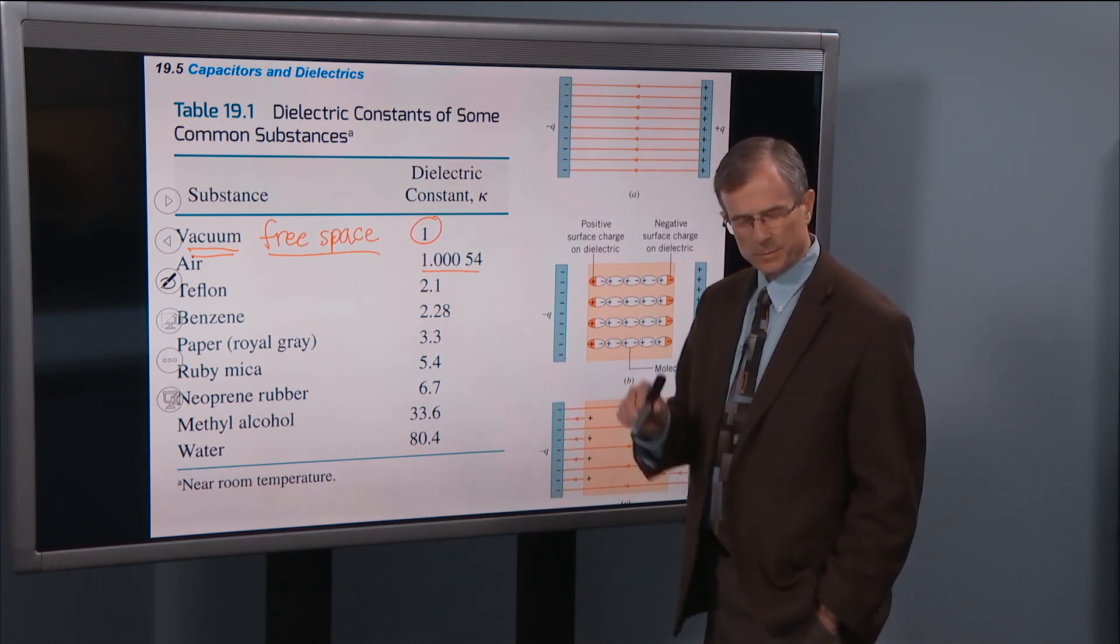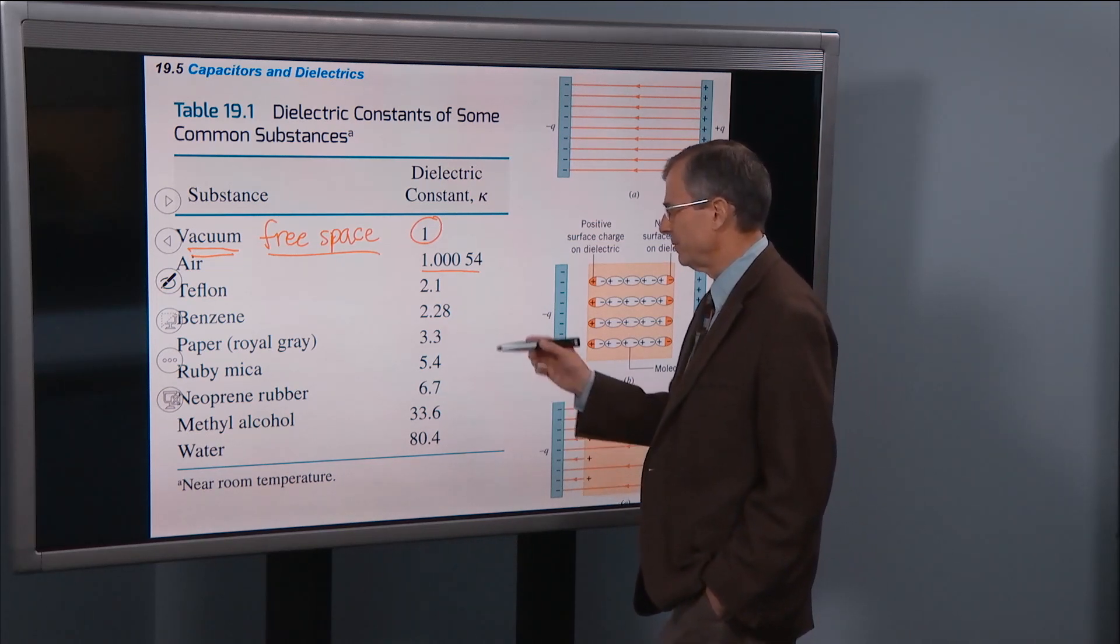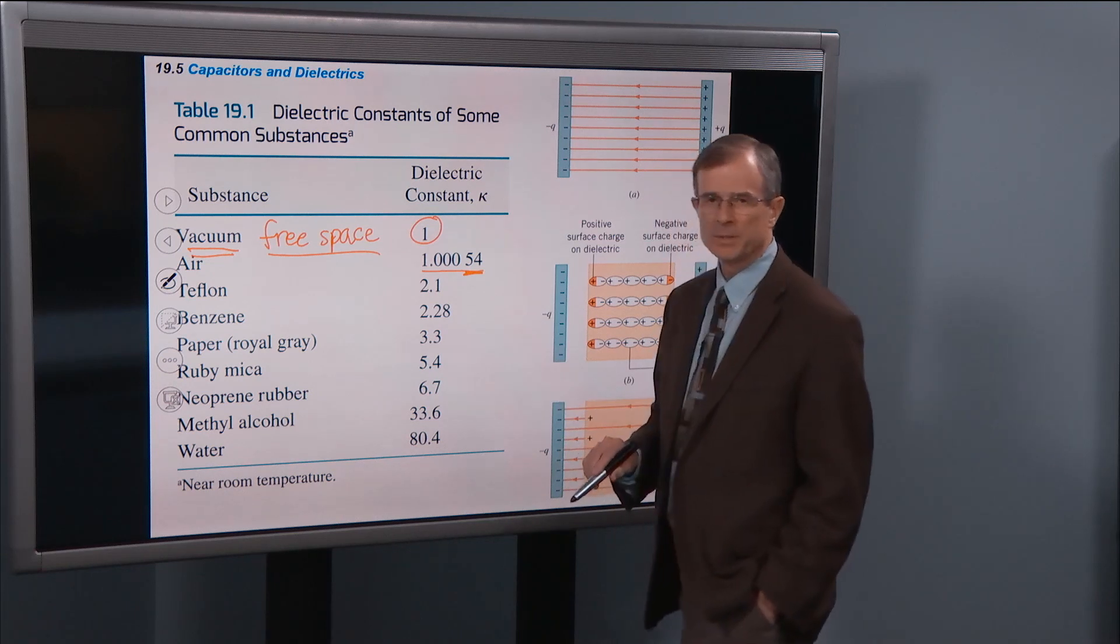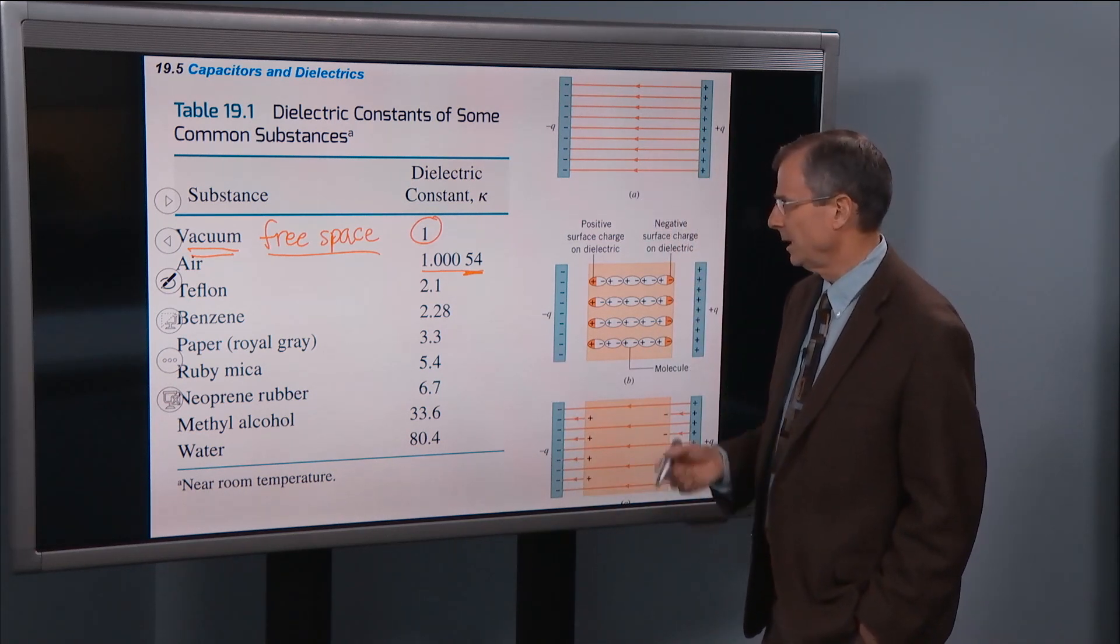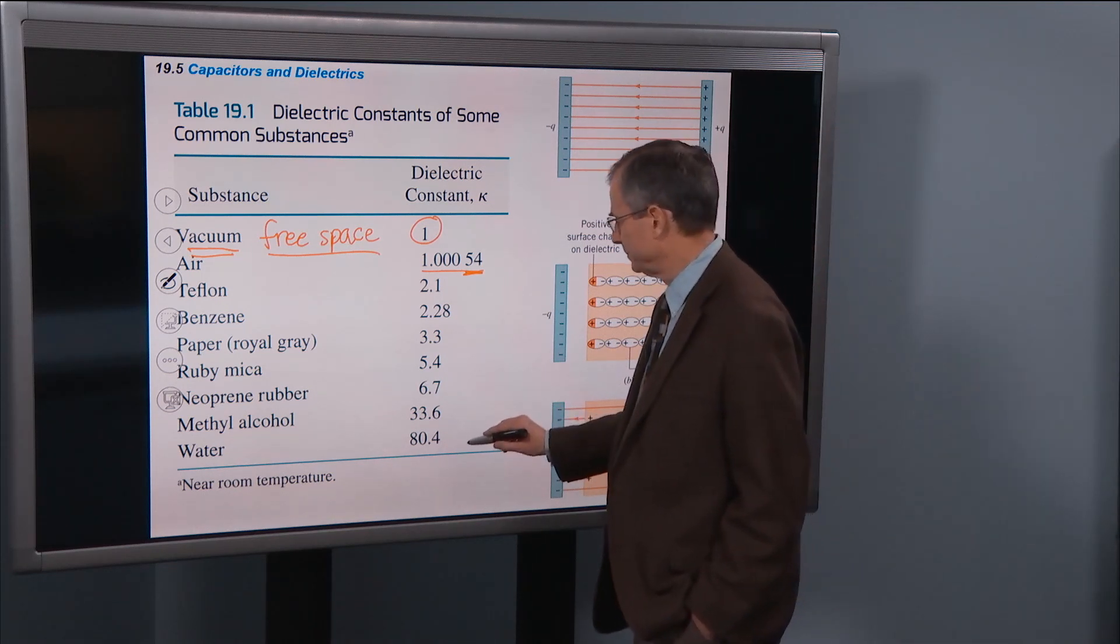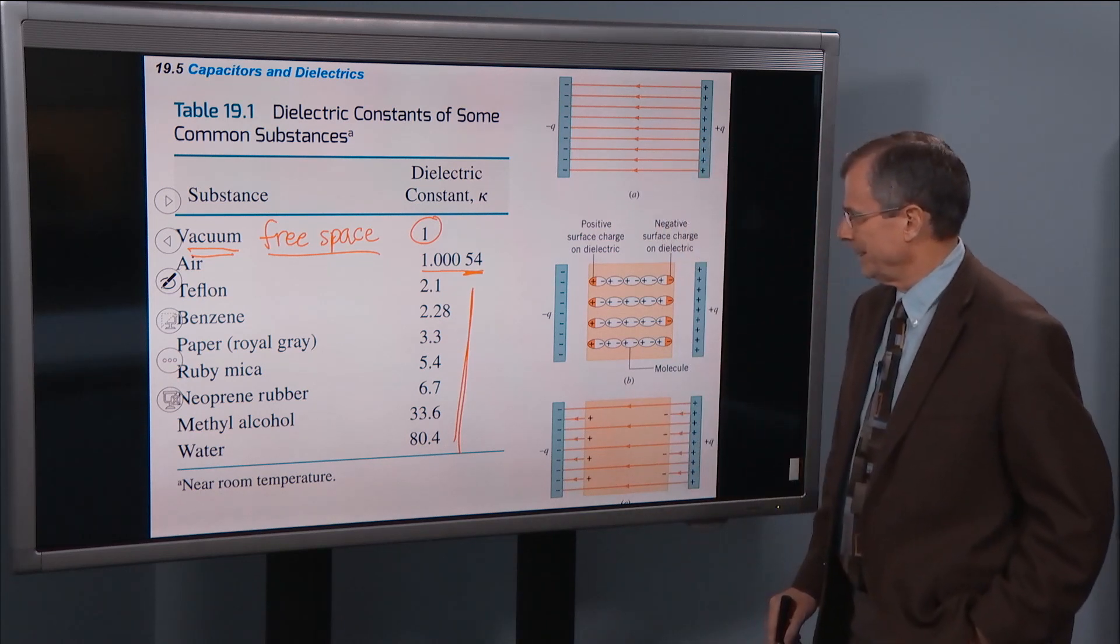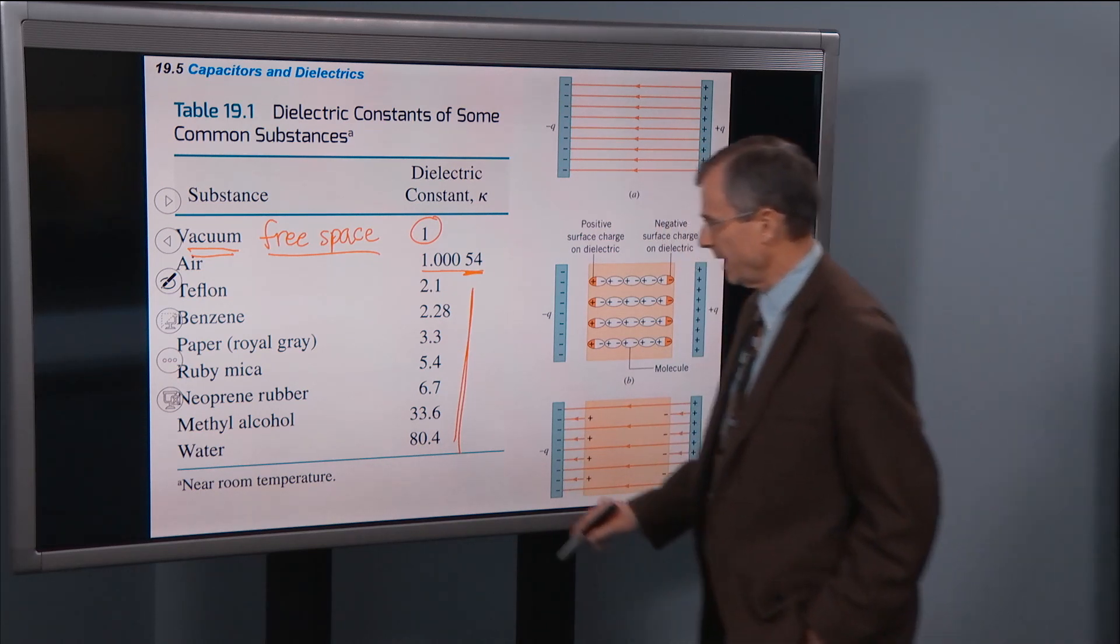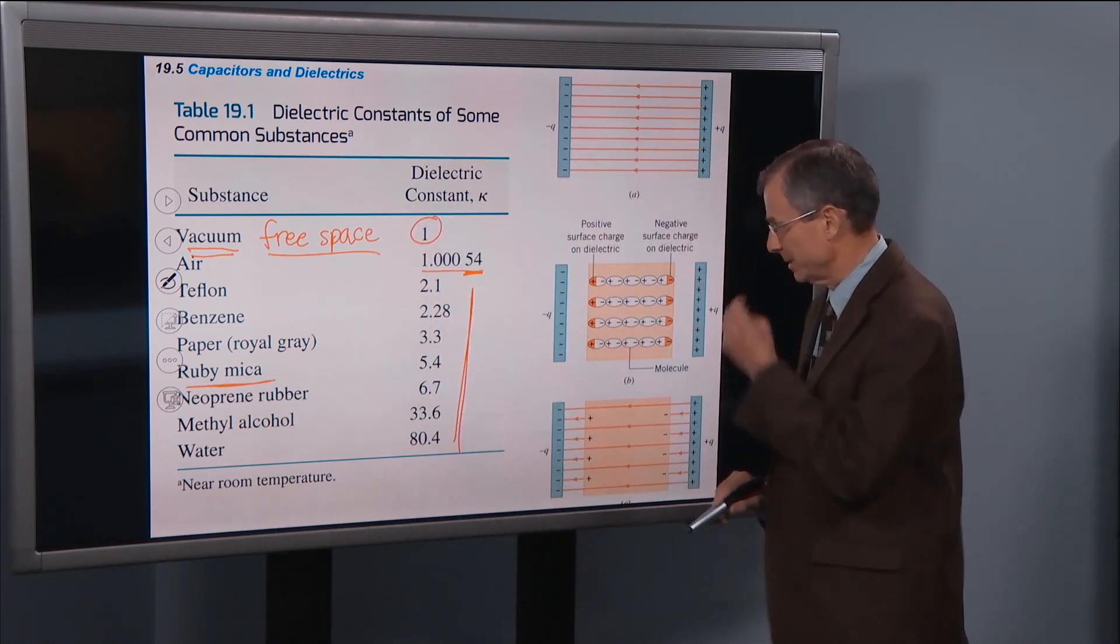Air has a dielectric constant that's very, very close to that of a vacuum. So those small amount of molecules in the air don't really make much of a difference. And it's just a tiny, tiny percent difference. So you might as well just treat air as if it were a vacuum as far as the dielectric constant is concerned. Some other dielectric constants. Mica is used for some capacitors, has a dielectric constant of 5.4.